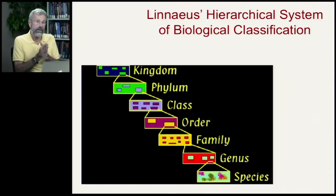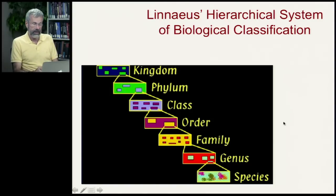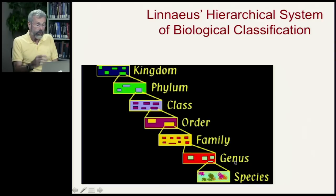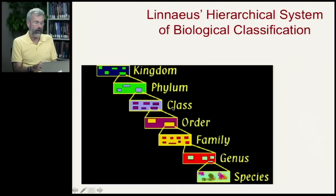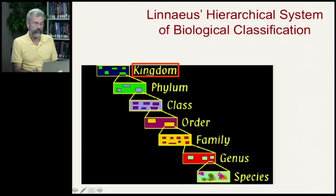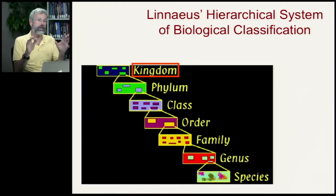So that's Linnaeus's hierarchical system of biological classification: species — very specific — a little bit more general to genus, then a family of genera, all the way up to kingdoms. According to Linnaeus, kingdom was the highest classificatory unit.